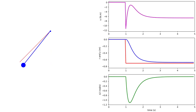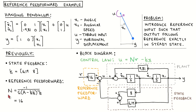Let's go back to the calculation of the reference feedforward to understand this error. When we look at the calculation of the reference feedforward gain, we can see that it depends on the state variable matrices of the plant model A, B, and C. If the plant model is inaccurate, then this feedforward gain will be inaccurate and will cause a steady-state error. For our example, the linearized pendulum model is a bad approximation of the non-linear pendulum model far away from the linearization point, which means that we can expect steady-state error for commanded pendulum positions far away from the linearization point.